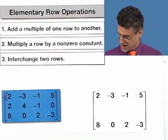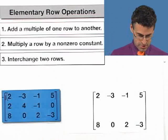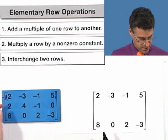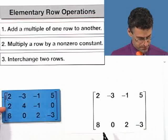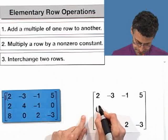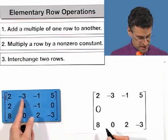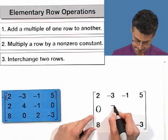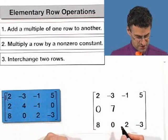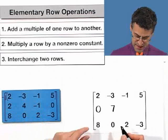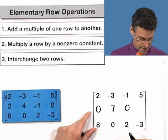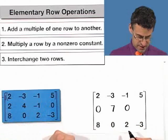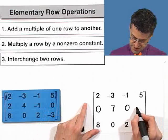And let's see what we're going to get for our new second row. So negative 2 plus 2 is 0. Negative 1 times negative 3 is going to be 3 plus 4 is 7. Negative 1 times negative 1 is 1 plus negative 1 is 0. And negative 1 times 5 is negative 5 plus 0 is negative 5.